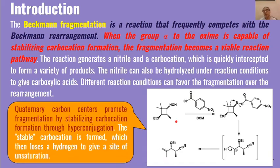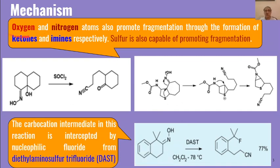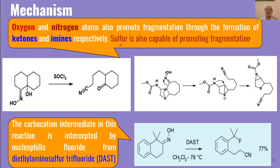Some more examples: if oxygen, nitrogen, or sulfur atoms are present at the alpha position to the oxime, these groups promote fragmentation rather than Beckmann rearrangement. If oxygen is present, we get ketones as the product. If nitrogen is present, we get imines — carbon-nitrogen double bonded compounds. Similarly, if sulfur is present at the alpha position, fragmentation is also promoted.